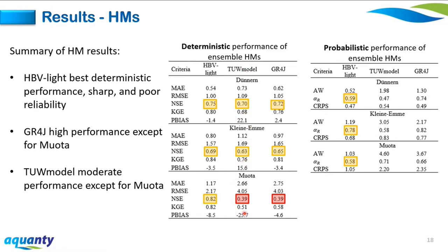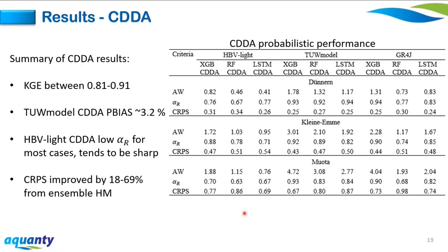For CDDA results, all CDDA variants achieved KGE above 0.8 to 0.91, and the TUW model bias reduced from 15–20% to 3.2%. Looking at probabilistic performance: HBV-light's alpha index still consistently performs poorly. Interestingly, HBV-light no longer has the best CRPS — other CDDA variants show good reliability in some cases, for example 0.93, 0.92, and 0.94 for TUW model variants in the Dünnern catchment. Most notably, CRPS improved by 18 to 69 percent from the standalone hydrological model.